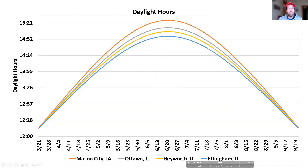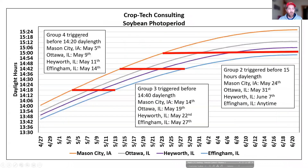If we put up three different maturities, looking at how many hours of day length it takes to trigger that soybean to flower — for a group four, that's 14 hours and 20 minutes — and when that occurs on the calendar for these four different cities, all the way up to a group two bean that doesn't trigger until 15 hours of day length, or nine hours of night length, and when that would occur.